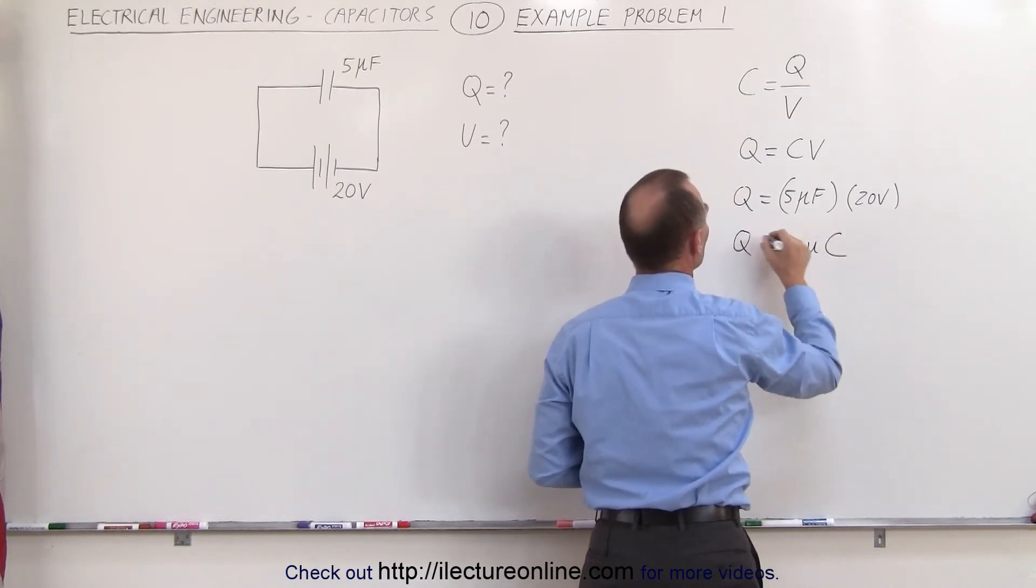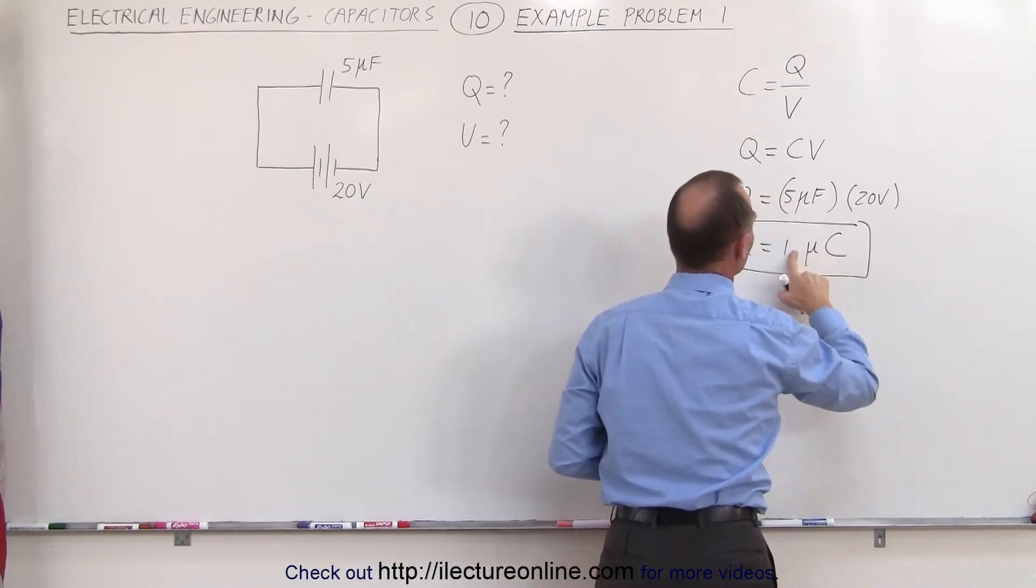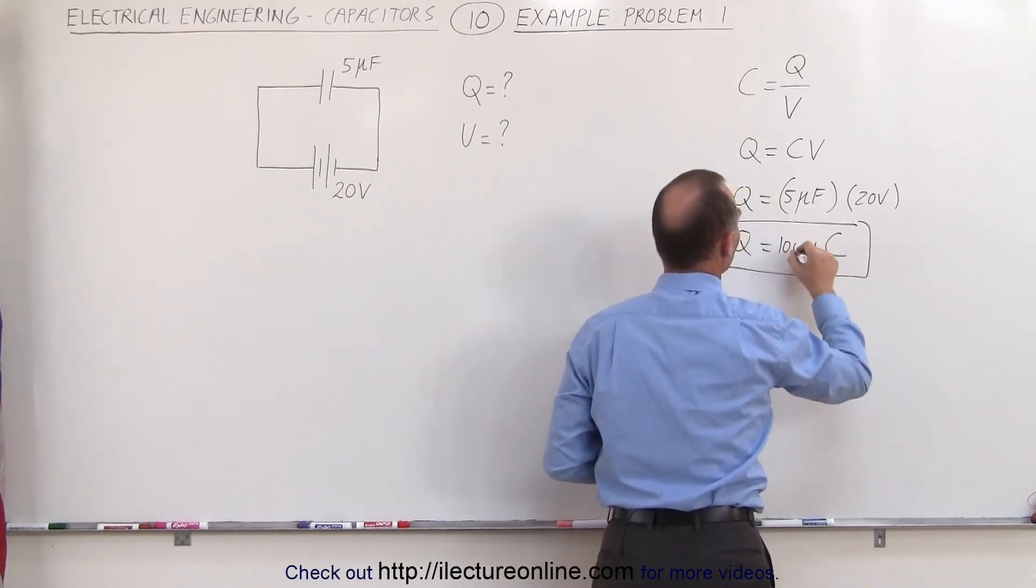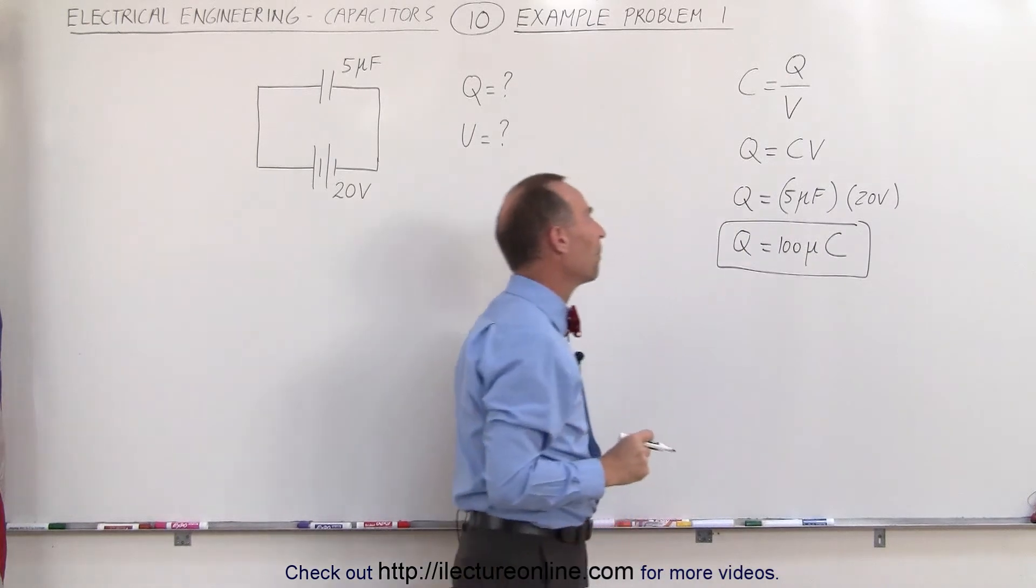Of course, the units for charge is coulombs. And I said 100 and I wrote 10, but 5 times 20 is 100 microcoulombs.